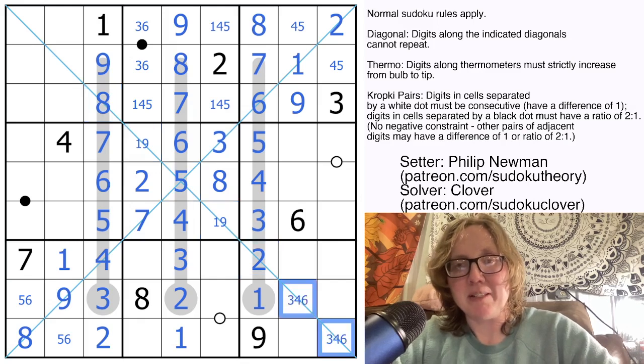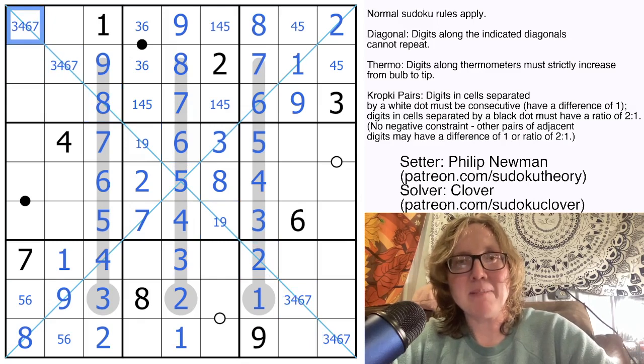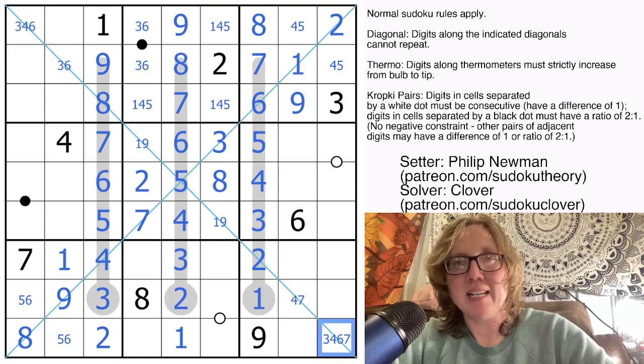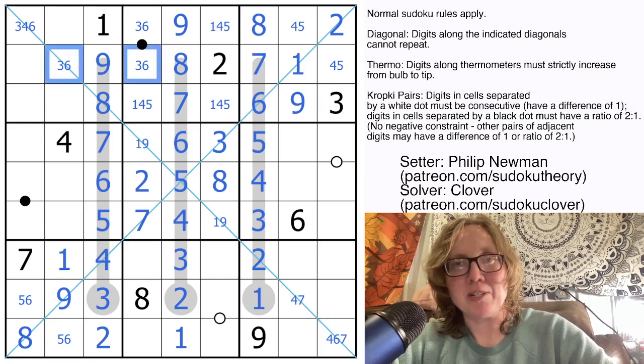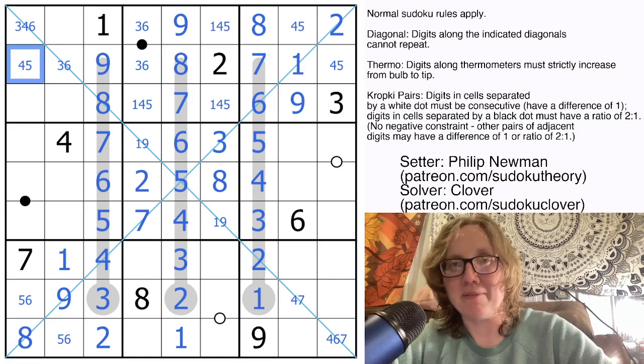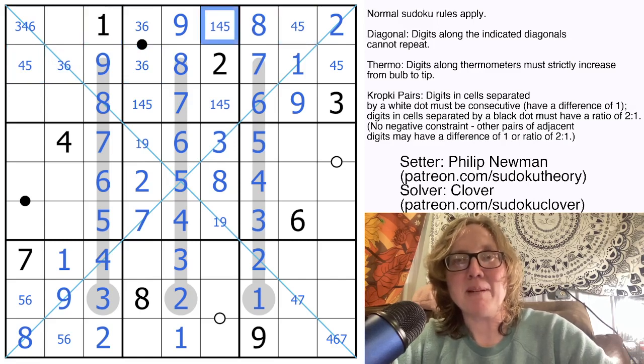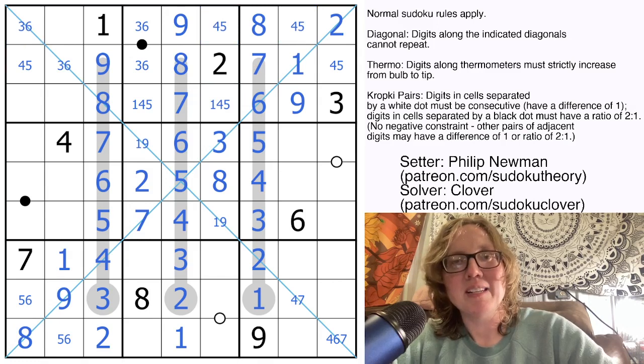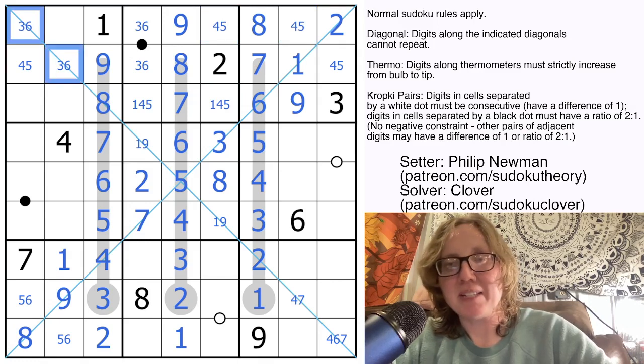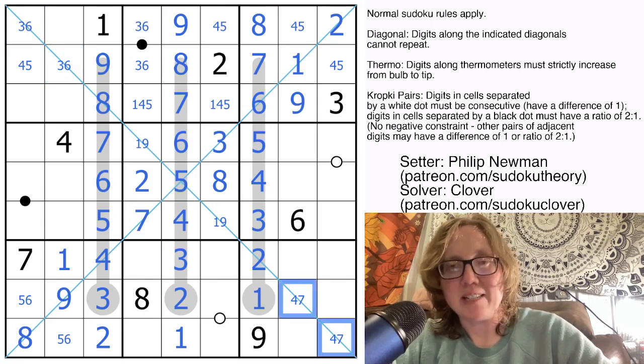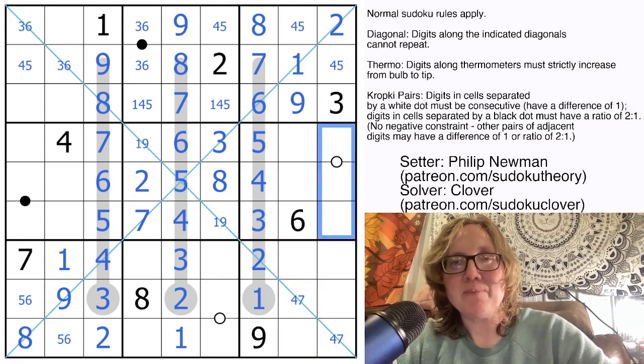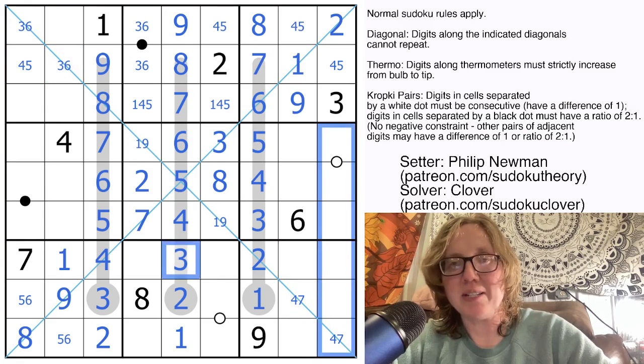So where can those go? Let's pencil mark them in and then make some eliminations. So this can't be a 7. This cannot be a 4 or a 7. This can't be a 6 or a 3. And this cannot be a 3. So what has that given us? We have this 3, 6 pair situation here that tells us that this is going to be either a 4 or a 5. We also have this 1 here which creates a 4, 5 pair there. That's going to be useful because that tells us that this cell cannot be a 4.